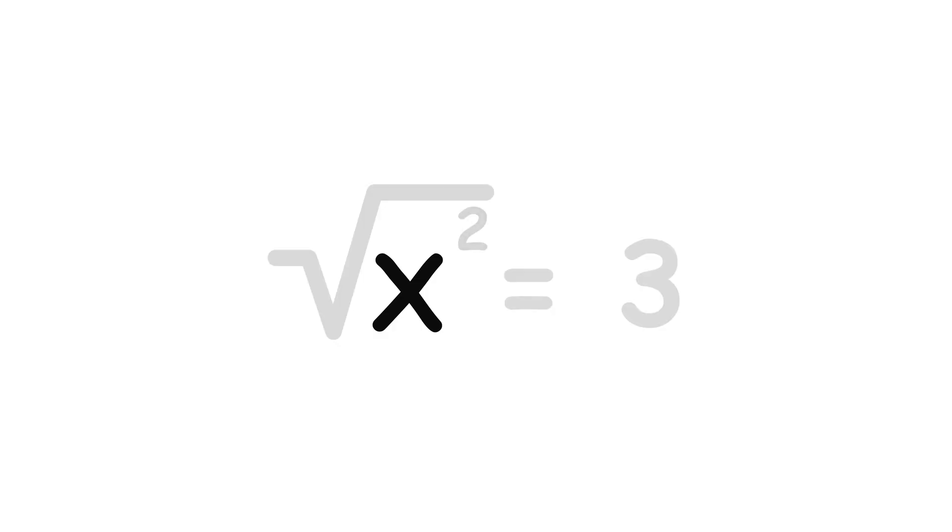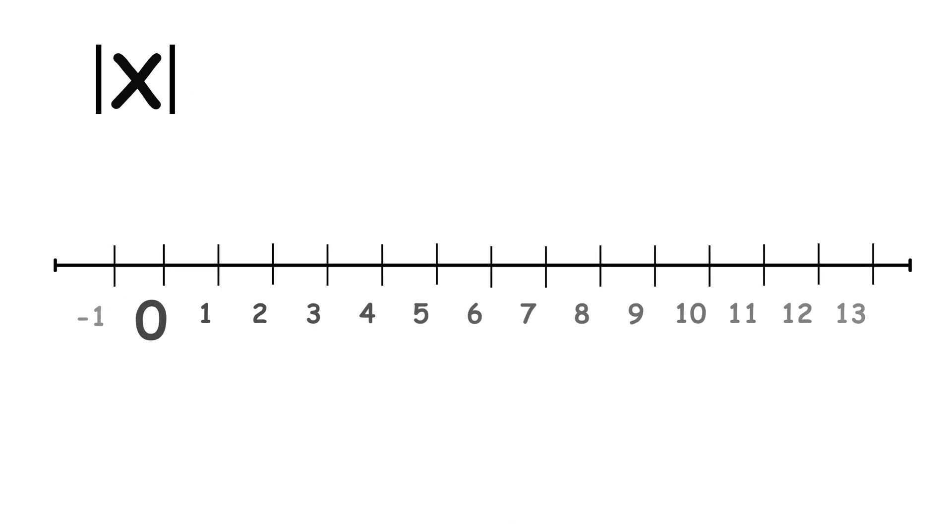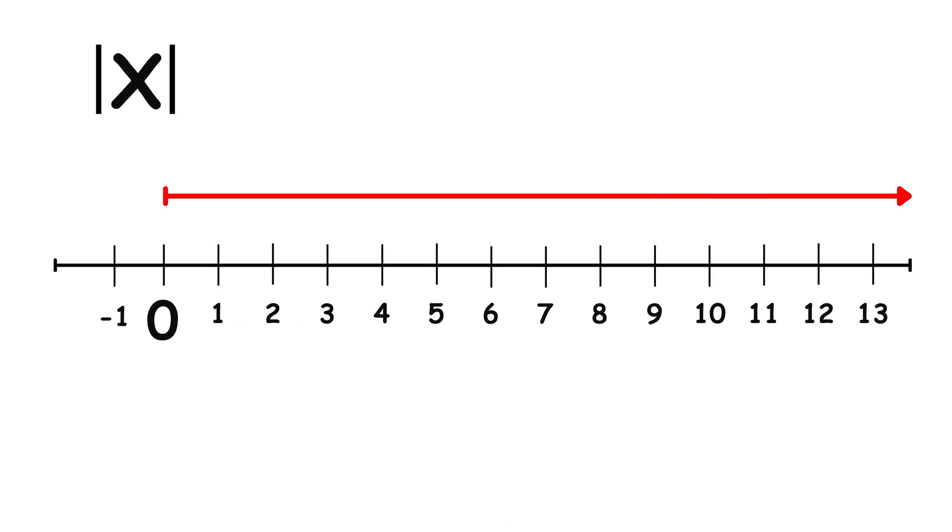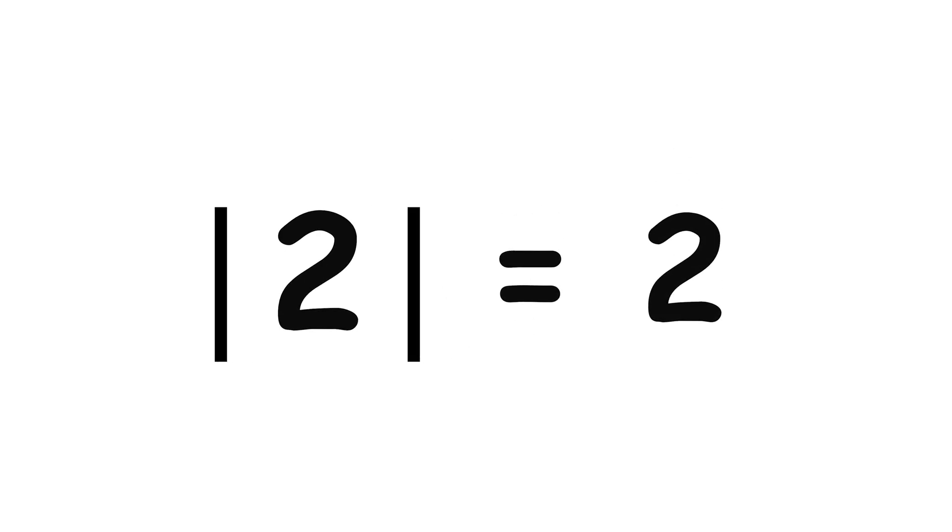In actuality, for a real number x, squaring it and then taking the square root will give you its absolute value. Absolute value of x equals 3. The absolute value of a real number, written with vertical bars, is just its distance from 0 on the real number line. When taking the absolute value, a positive number stays positive, whereas a negative number becomes positive. There are two real numbers whose absolute value is 3, those being 3 and negative 3.